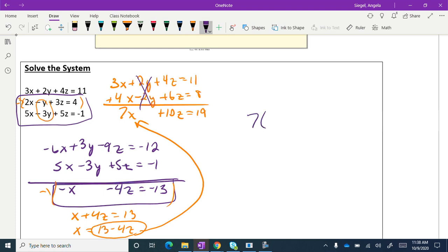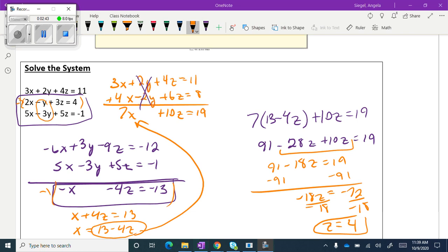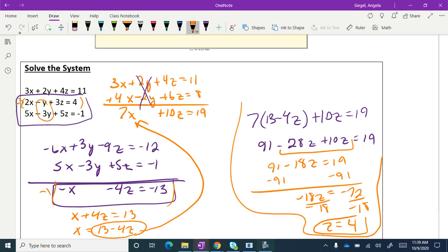I'm going to say 7x, which is 13 minus 4z, plus 10z equals 19. If you'll notice what I'm doing, I'm getting all the z's together. You definitely don't have to do it this way. I just think it might be a little bit nicer to look at that way. What that did right here is it allowed me to find the variable z. Once you find any variable, it goes a lot faster.